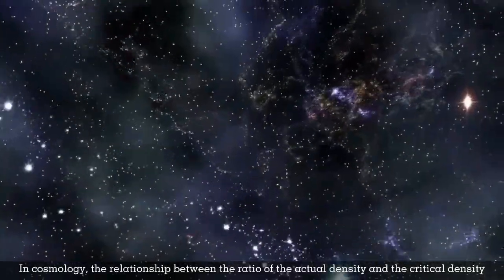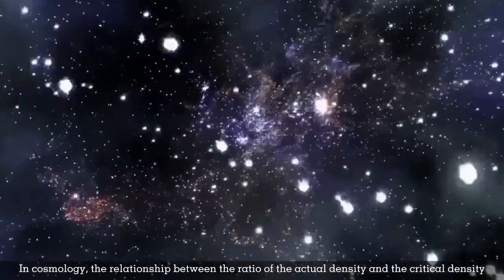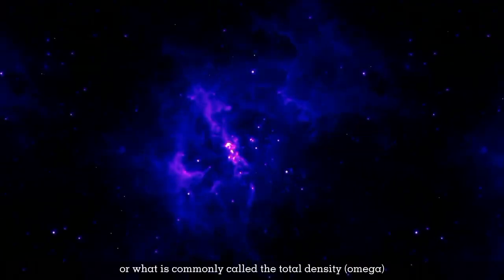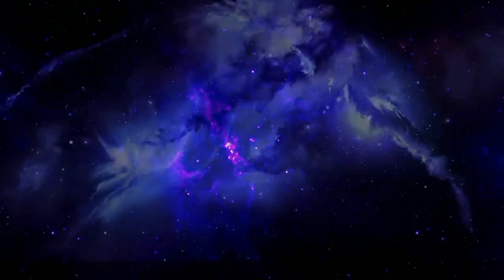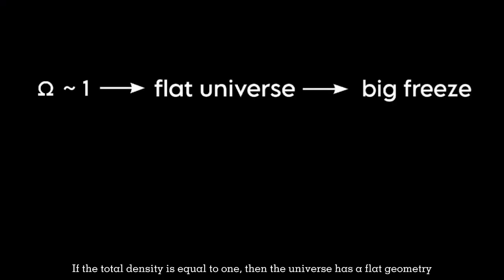In cosmology, the relationship between the ratio of the actual density and the critical density, or what is commonly called the total density omega, and the geometry of the universe and the ultimate fate of the universe are very closely related. If the total density is equal to 1, then the universe has a flat geometry, which means that the ultimate fate of the universe is a big freeze.